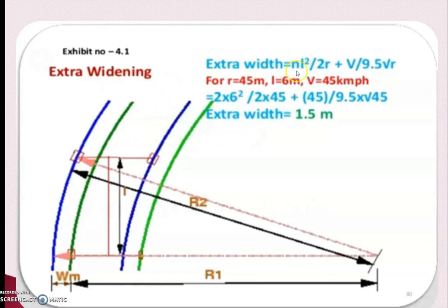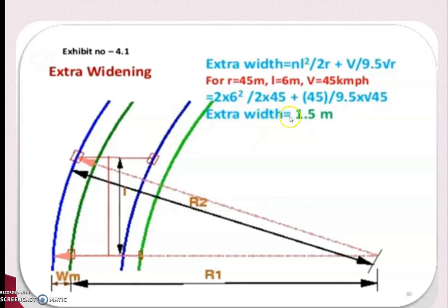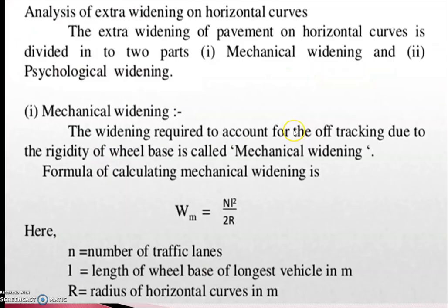The extra width is calculated as NL²/2R + V/9.5√R, where R is the radius (taking the average of R1 and R2, for example 45 meters), L is the horizontal distance (wheelbase length), and V is the velocity in km/h. So we can calculate the extra width or widening at a particular situation.